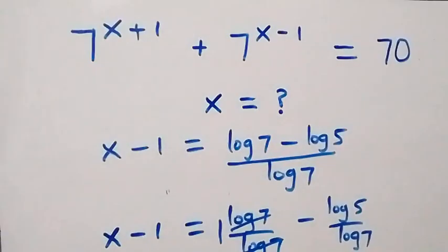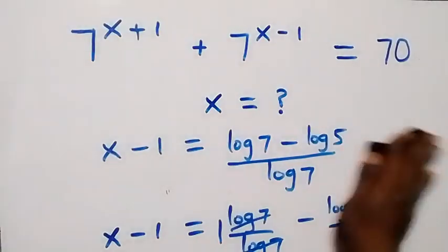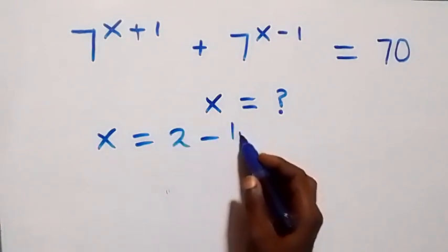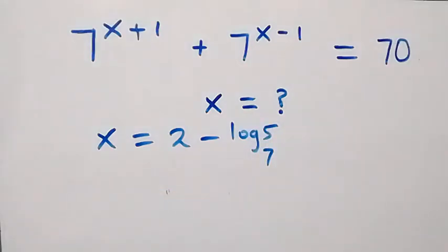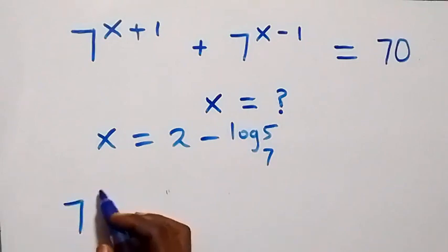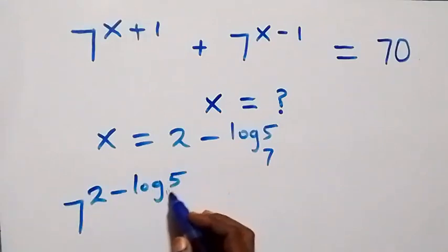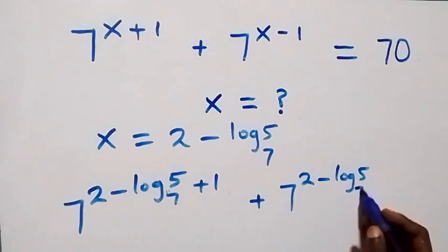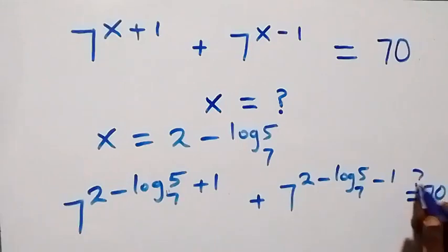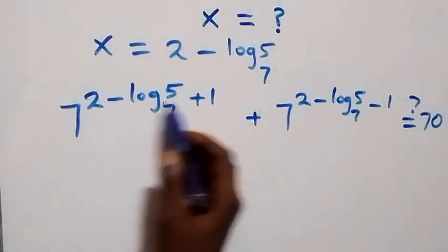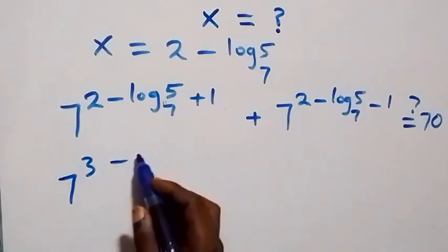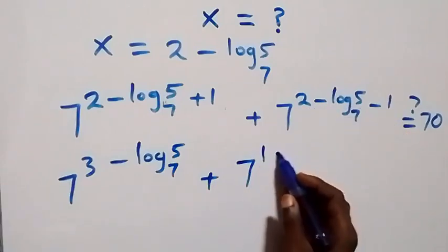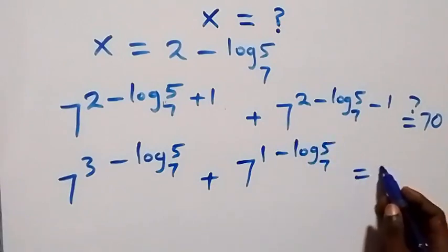Now let's substitute in the equation given to confirm if it satisfies the problem. With x equals to two minus log five to base seven, the equation becomes seven raised to power two minus log five to base seven plus one, then plus seven raised to power two minus log five to base seven minus one, equals to 70. Simplifying the exponents: two plus one is three, and two minus one is one.